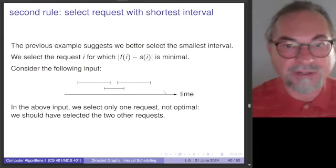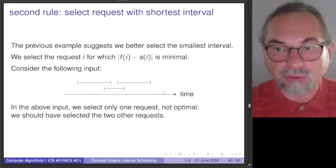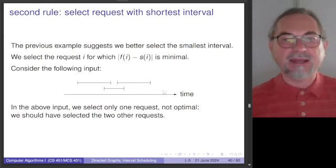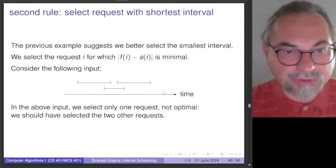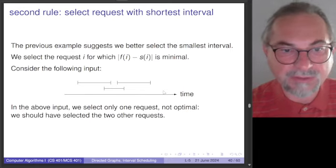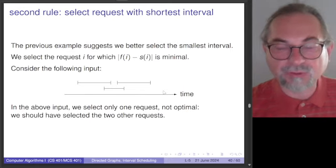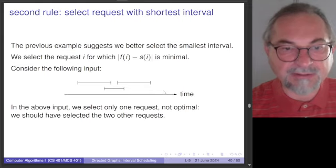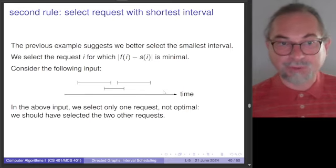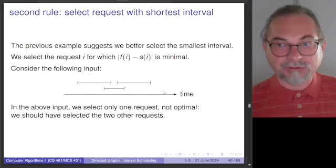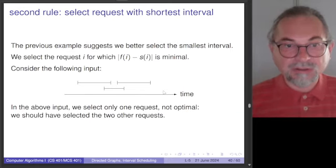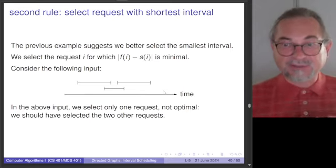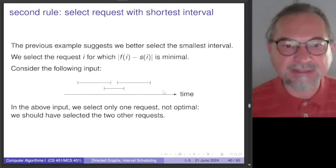The obvious rule doesn't work. Why not start with the shortest interval? We would sort intervals by length and select them in that order. But consider an input with three requests where the shortest request overlaps with the two other requests. If we use this scheduling policy, we would not be optimal — we should have selected the other requests instead. So starting earliest and picking the shortest: in both cases, not a good idea.